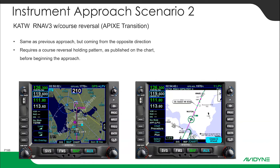In a previous lesson, we flew the RNAV-3 approach from Fond du Lac via Oshkosh into Appleton. We flew the RNAV-3 and then we flew the missed. We are now sitting in the hold after that missed approach, holding at Asigi. What we want to do is reload the approach and fly the course reversal to get back and reshoot this RNAV approach after the missed.